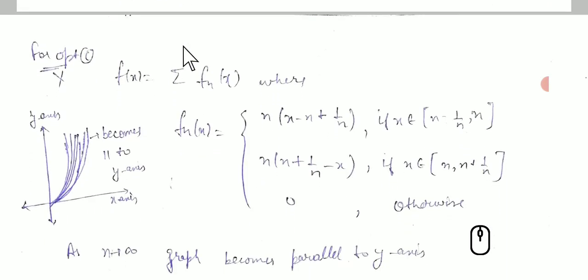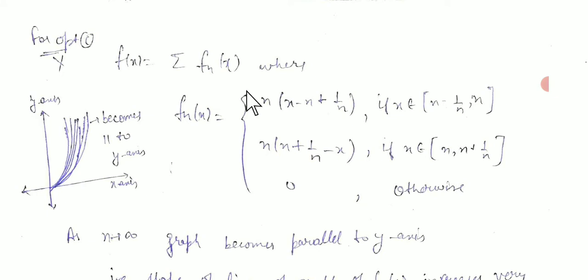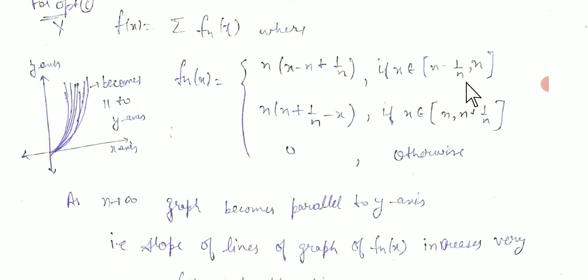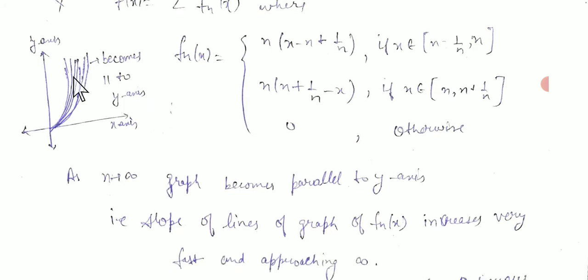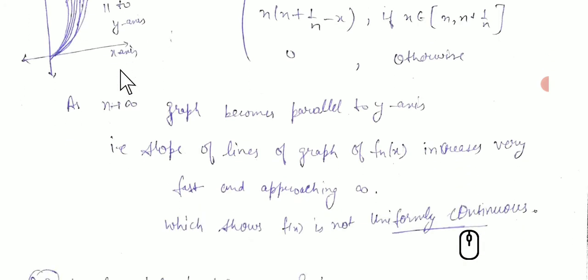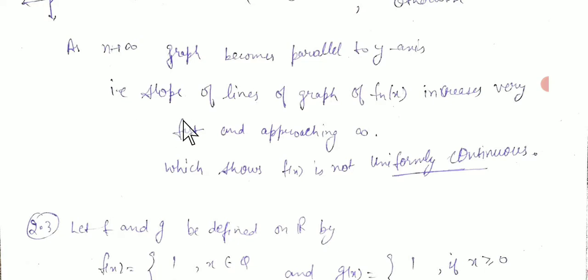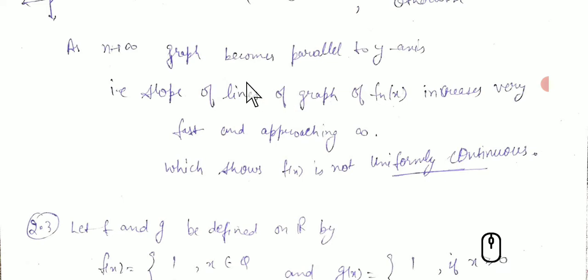For the third option, we have a sequence of functions fₙ(x). As n tends to infinity, 1/n tends to 0. If we look at the expression n·x − n²/(n²+1) as n→∞, the slope of fₙ(x) increases without bound, approaching infinity. Since the slope approaches infinity, the graph becomes parallel to the y-axis, which shows that this function is not uniformly continuous.